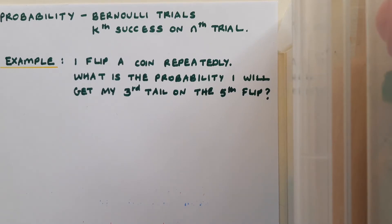So here's our example. I flip a coin repeatedly and I want to find the probability that I will get my third tail on the fifth flip.